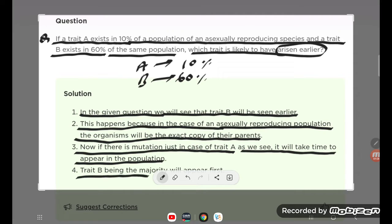So trait B, being the majority, will appear first. This is our required answer, students.